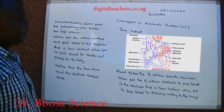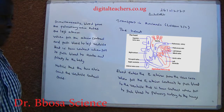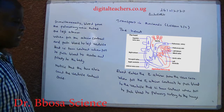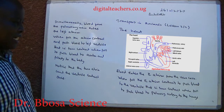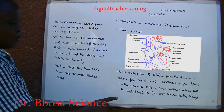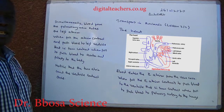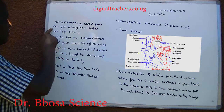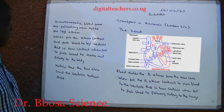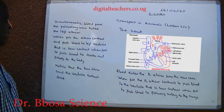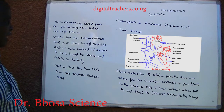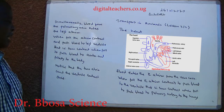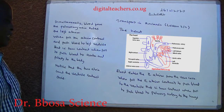The heart: blood enters the right atrium from the vena cava. When full, the right atrium contracts to push blood to the ventricle. That in turn contracts when full to push blood to the pulmonary artery to the lungs. Simultaneously, blood from the pulmonary vein enters the left atrium. When full, the atrium contracts and pushes blood to the ventricle, which in turn contracts to push blood to the aorta and finally to the body.